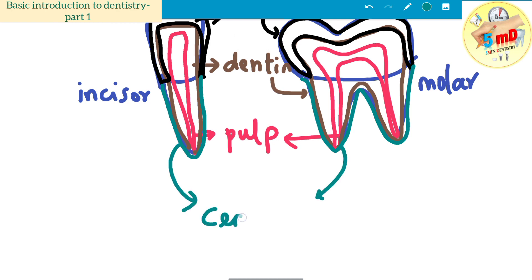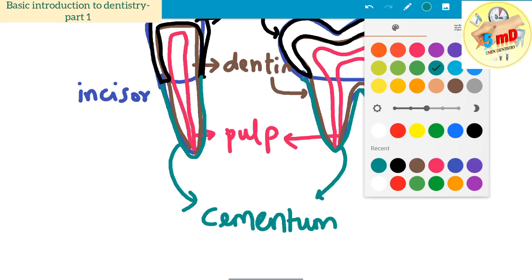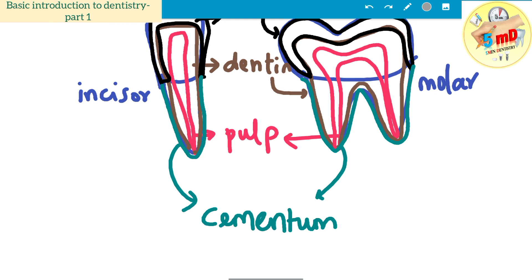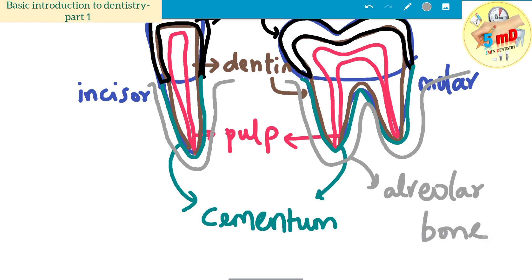These cementum-covered tooth roots are seated in an alveolar socket—the bone present in each jaw. This alveolar bone forms the housing of your tooth.